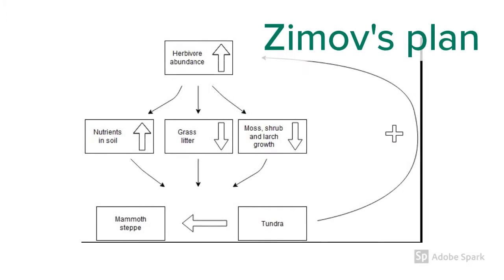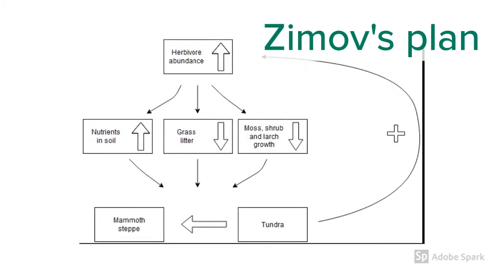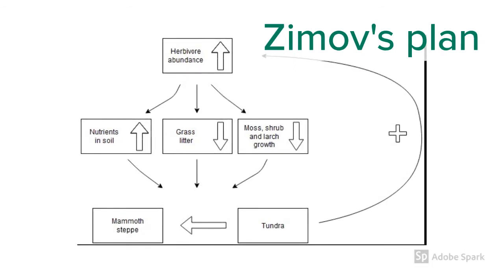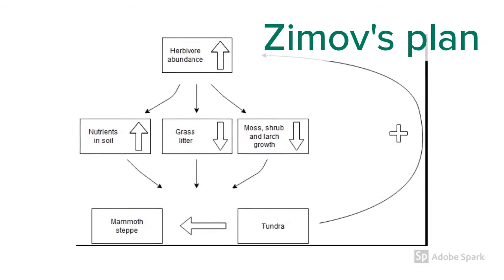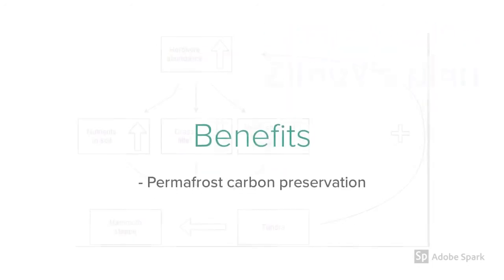By reintroducing and managing big herbivores into the tundra climate, they can convert it back to the mammoth steppe. Multiple small-scale studies have already succeeded in this and have shown that this change has major benefits to help fight global warming.